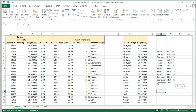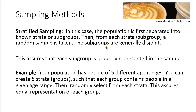Those are the main differences between the different sampling methods, and there's certainly overlap between all of them. In many cases, the type of sampling performed is largely dependent on the accessibility, the type of research you're doing, the funding, and the amount of time you have.